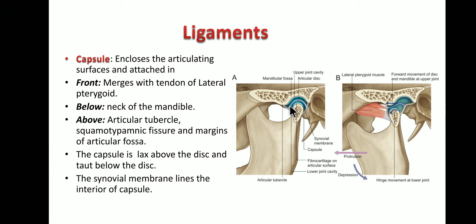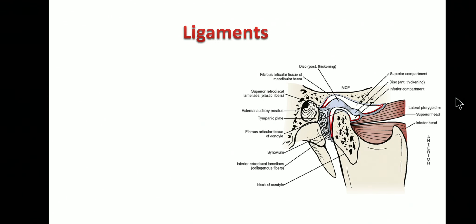The interior of the capsule is lined by the synovial membrane, but the synovial membrane does not line the articular surfaces. Anteriorly above is the articular tubercle, posteriorly is the squamotympanic fissure, and below is the neck of the mandible. The synovial membrane avoids the articular surfaces to prevent it from being torn during the various movements of the joint.